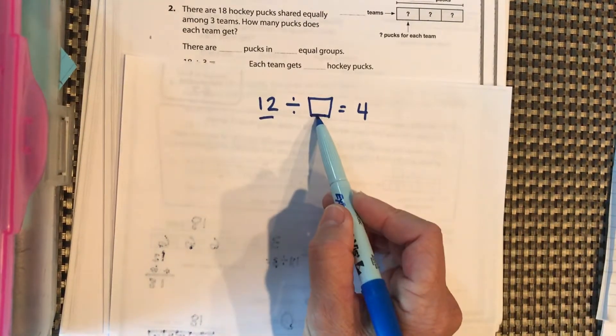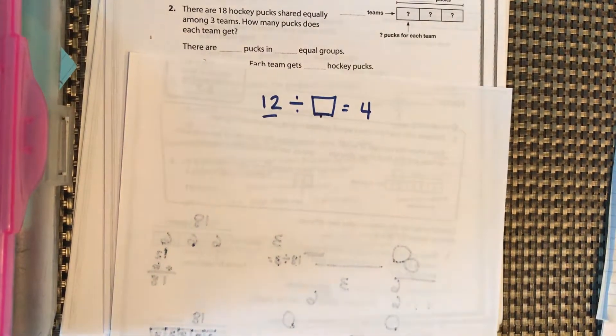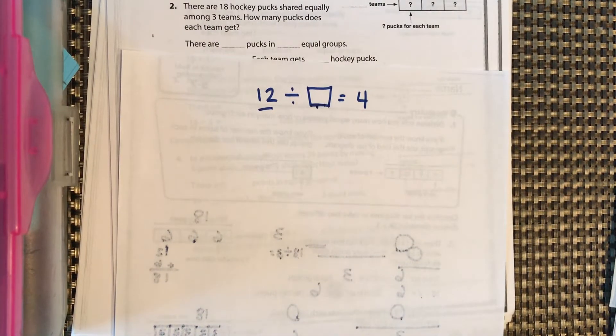Remember, the answer, this needs to get smaller, and you need to have equal groups. And you can show me tomorrow. Good job.